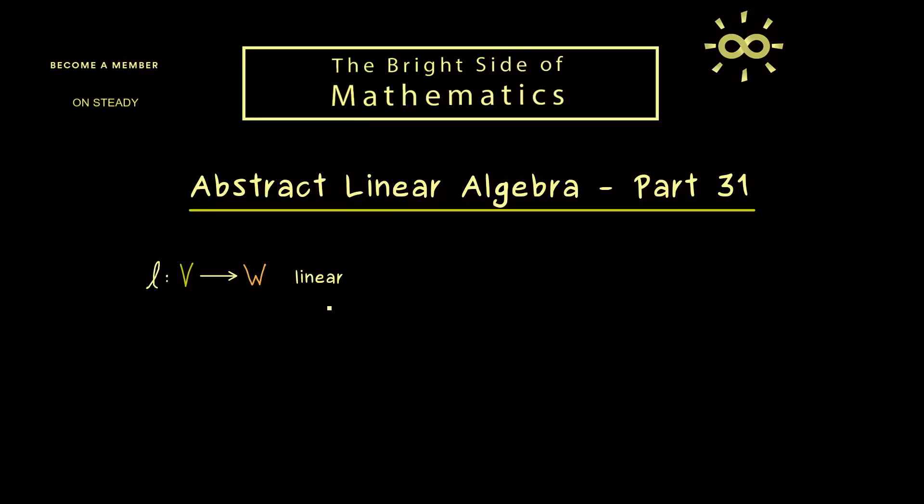Okay, then let's immediately start by considering a linear map between two general vector spaces V and W. This means that V and W are chosen as F-vector spaces, where F is either given by the real numbers or by the complex numbers.